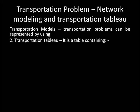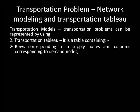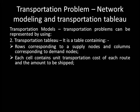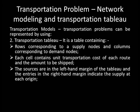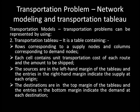The transportation table contains rows corresponding to supply nodes and columns corresponding to demand nodes. Each cell contains the unit transportation cost of each route and the amount to be shipped. The sources are in the left-hand margin of the tableau and the entries in the right-hand margin indicate the supply at each origin. The destinations are in the top margin and the entries in the bottom margin indicate the demand at each destination.